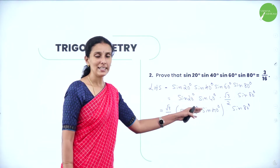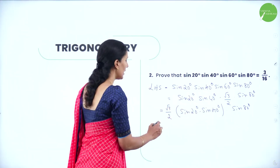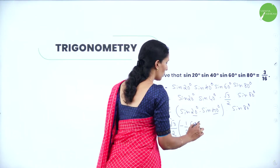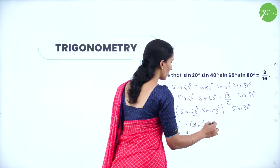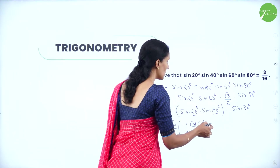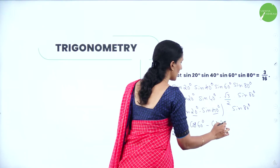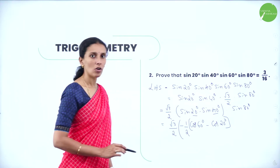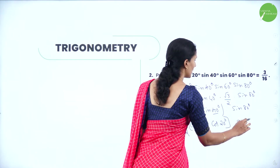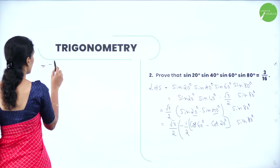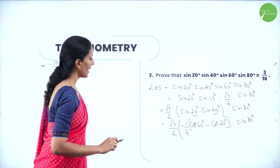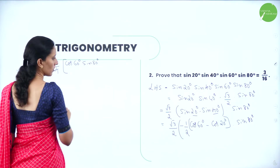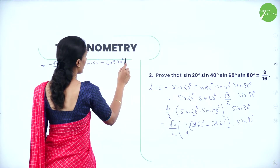The product sin20°·sin40° is in the form sinA·sinB. Using the formula sinA·sinB = −½[cos(A+B) − cos(A−B)], we get −½[cos60° − cos20°]·sin80°. Since cos(−20°) = cos20°, this simplifies to (cos60° − cos20°)·sin80°.